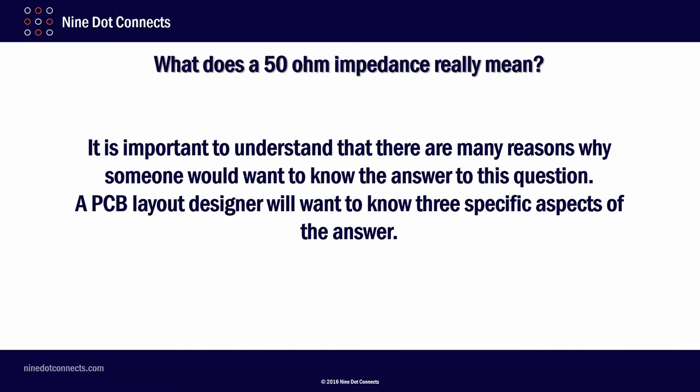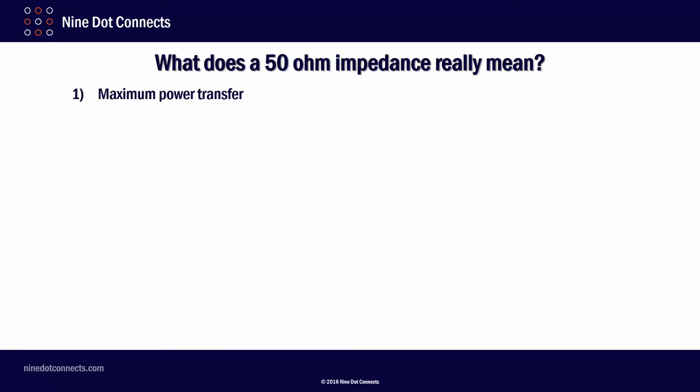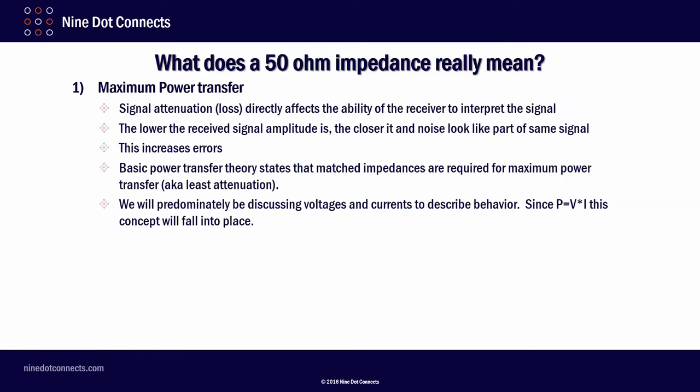It is important to understand that there are many reasons why someone would want to know the answer to this question. A PCB layout designer will want to know three specific aspects of the answer: maximum power transfer, reflections, and radiation. As far as maximum power transfer goes, we are going to be mostly worried about signal attenuation, that is the loss, because it directly affects the ability of the receiver to interpret the signal. The lower the received signal amplitude is, the closer it and the noise look like some part of the same signal. This increases errors, known as bit error rates. Basic power transfer theory states that matched impedances are required for maximum power transfer. In other words, least attenuation.